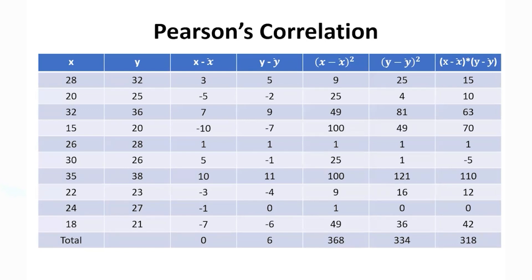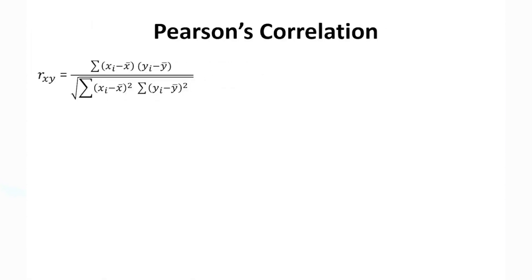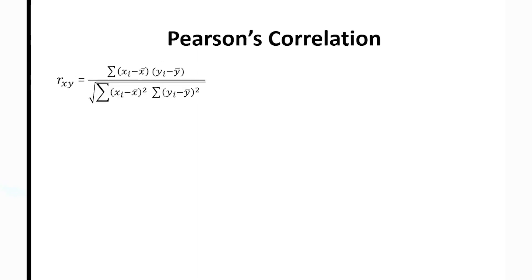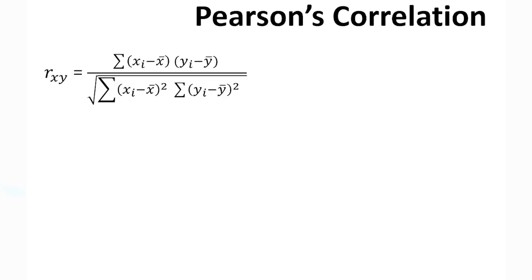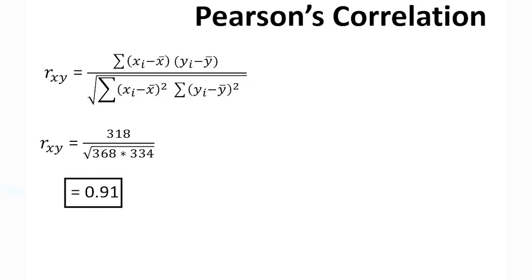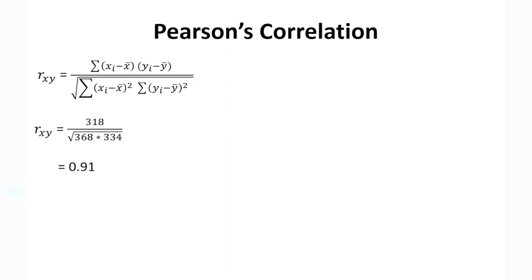Now we plug these values into the Pearson's correlation formula. In the numerator we have the summation of (xi minus x-bar) multiplied by (yi minus y-bar). In the denominator we have the square root of the sum of squared (xi minus x-bar) values multiplied by the sum of squared (yi minus y-bar) values. Plugging in all the pieces from the previous table and simplifying, we get approximately 0.91. Since anything above 0.8 is generally considered a strong correlation, and this value is greater than 0.9, we can conclude there is a strong positive correlation.